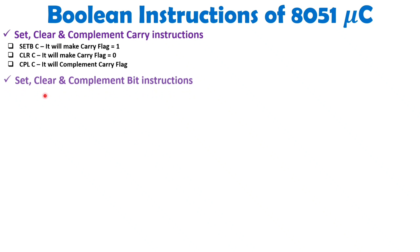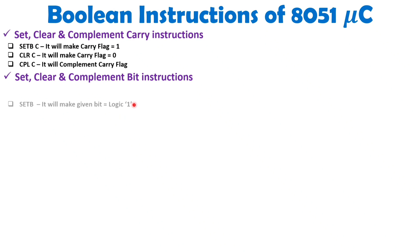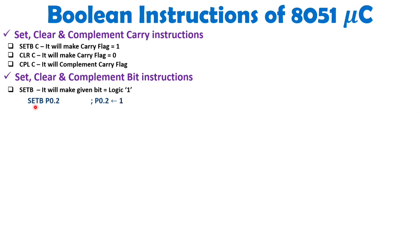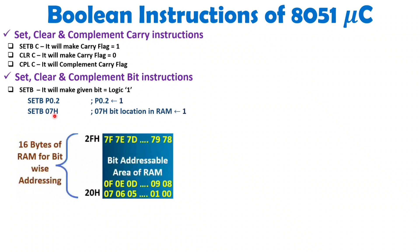Now I will explain set, clear, and complement bit instructions with ports and internal RAM memory locations. The syntax SETB is used to set a bit. For example, SETB P0.2 sets pin 2 of Port 0. All four ports inside 8051 are bit addressable, so any bit of those ports can be set. When you execute SETB 07h, then the bit at address 07h in the bit-addressable RAM area will become one.